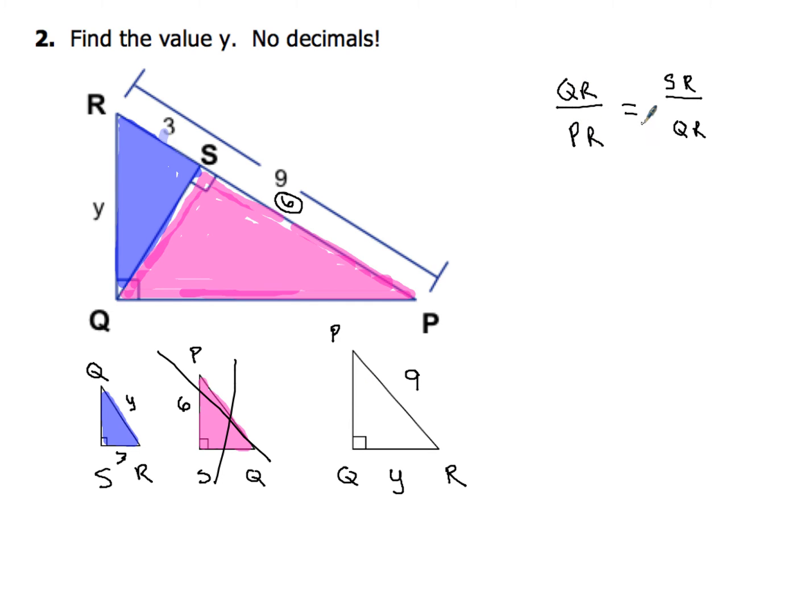And now back to our proportion. So QR over PR equals SR over RQ or QR. And from there, you're just going to substitute your values in, and then solve the proportion. So go ahead and do that. And when you're done, come on back and see how you did. Should be pretty straightforward for you from here.